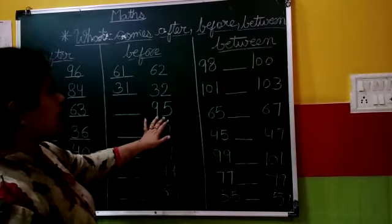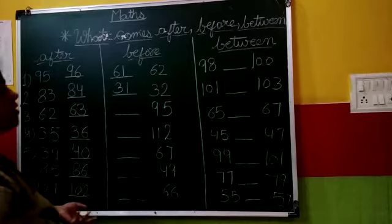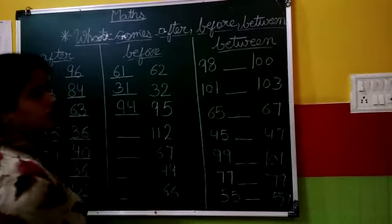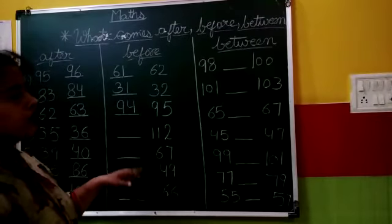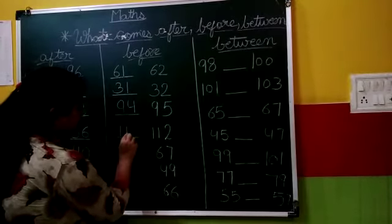Next is 95. What number comes before 95? 94. Next is 112. What number comes before 112? 111.